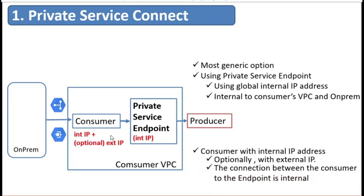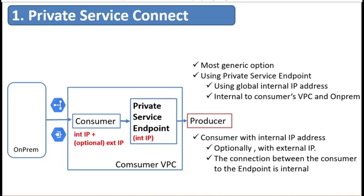For the consumer, first of all, they must have an internal IP address. Optionally, they can also have an external IP address. However, the connection between the consumer and the endpoint is always private. So in short, regardless of whether or not the consumer has an external IP address, the traffic between the consumer and the Private Service Connect endpoint is always internal. The external traffic to the producer will be handled by the service endpoint itself. With this, the consumer is secured by not exposing their IP address to the producer directly.